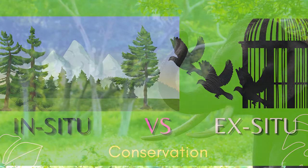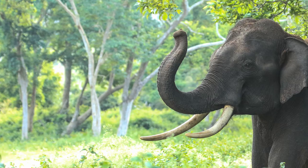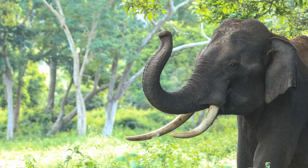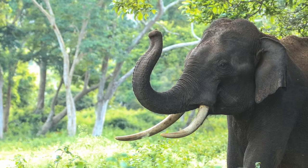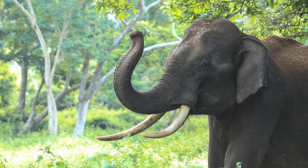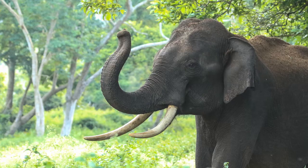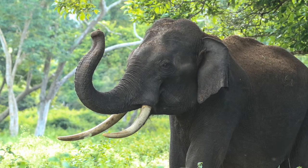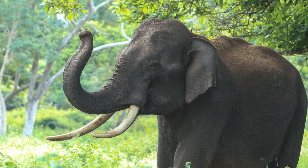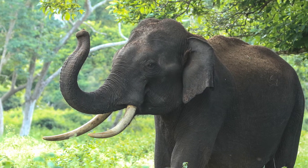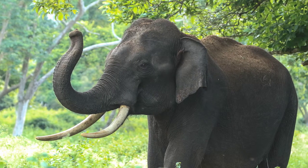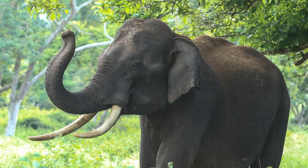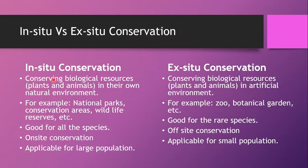In situ conservation means the conservation of biological resources — that is, plants and animals — in their original natural environment or original habitat. In situ means the natural habitat of the plants and animals, whereas ex situ means the artificial habitat of plants and animals.